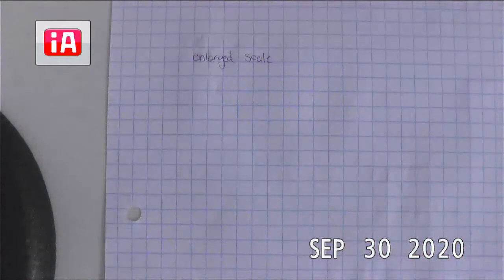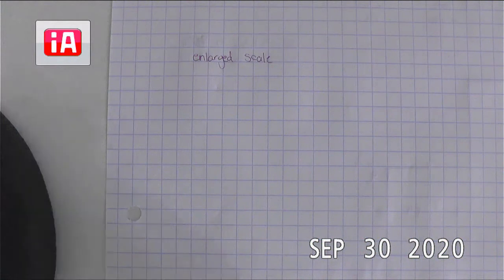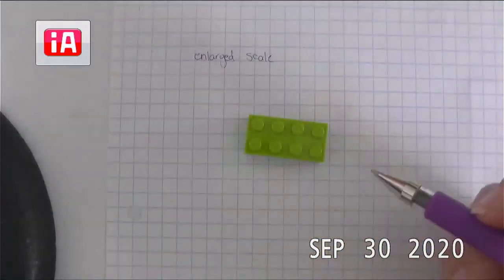Now we typically do enlarged-scale drawings when we have an object that is really tiny and we want to see all of the different details, maybe the different texture, but we want to be able to see all of the different pieces and parts.